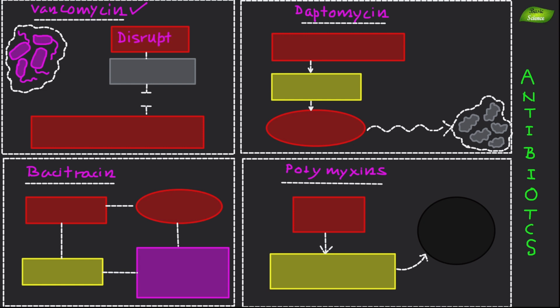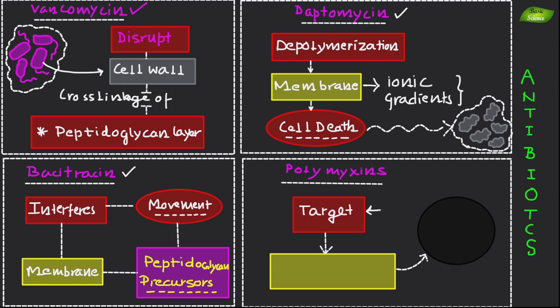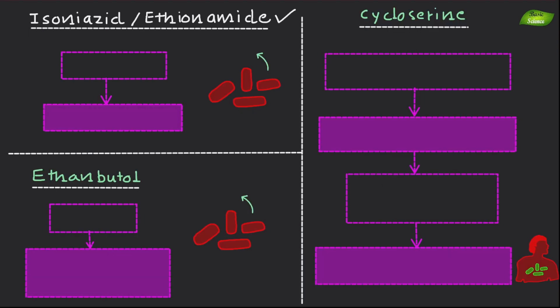Vancomycin disrupts cell wall integrity by inhibiting the cross-linkage of peptidoglycan layers. Daptomycin causes depolymerization of the bacterial cytoplasmic membranes, leading to the disruption of ionic concentration gradients and ultimately causing cell death. Bacitracin interferes with the bacterial cytoplasmic membrane and the movement of peptidoglycan precursors, while polymyxin targets and inhibits bacterial membranes directly.